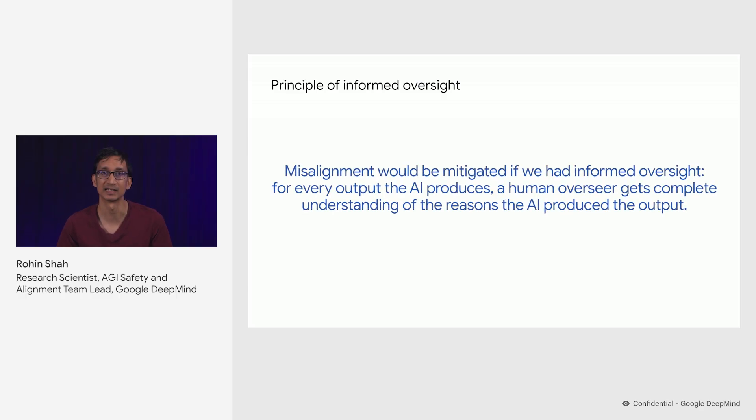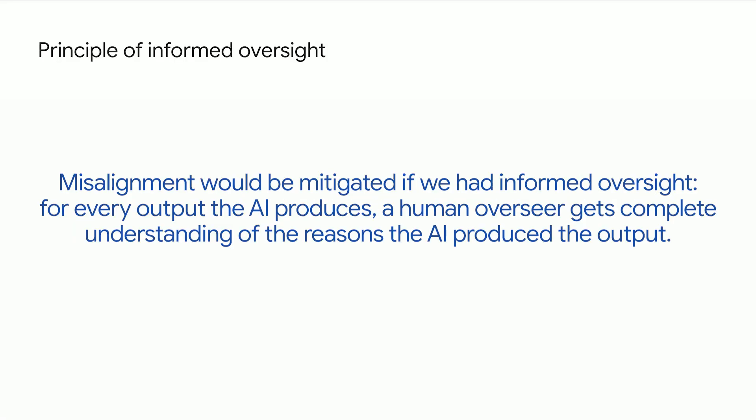You can mitigate misalignment if, for every output that the AI system is producing, you get to understand all of the reasons underlying why the AI produced that output — or more colloquially, you understand everything that the AI system knows. Intuitively, this means that the AI system can't deliberately cause harm, because by hypothesis the overseer would know this as well and can take corrective action.